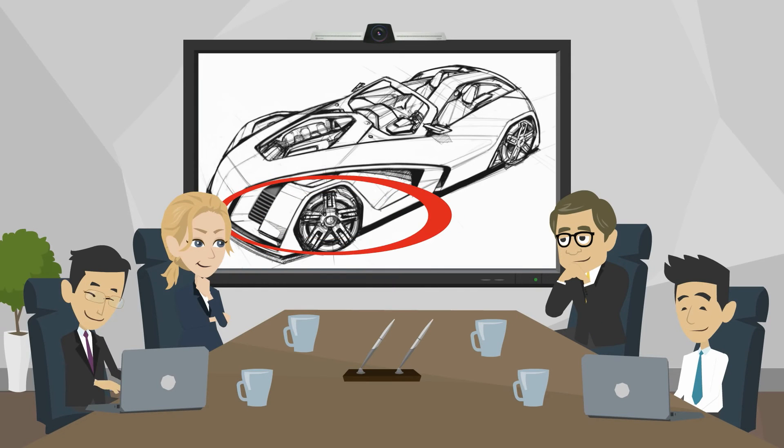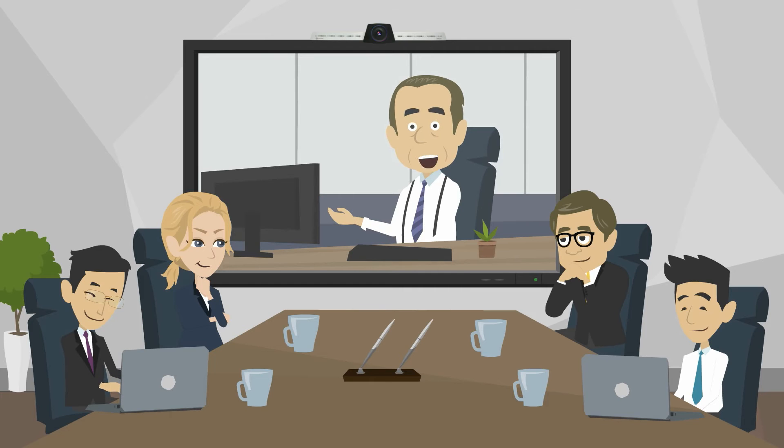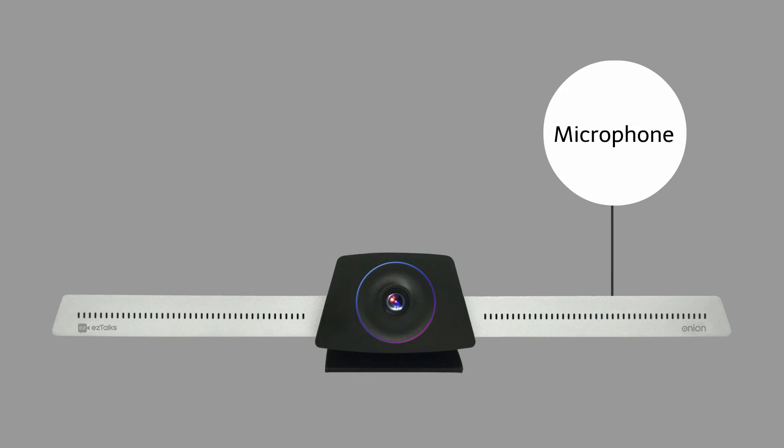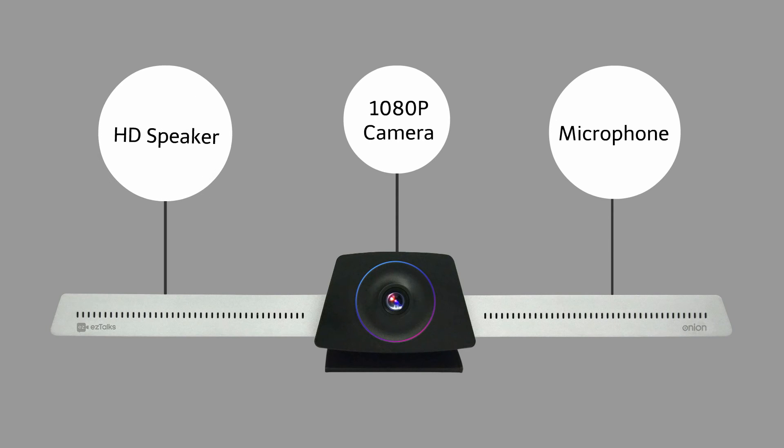Share screen to your team, give close shots to any participant when he or she speaks. Onion is engineered with smart microphone, 1080p camera with 120-degree wide-angle lens, built-in HD speaker, all working together to guarantee everyone in the meeting room can be seen and heard clearly.